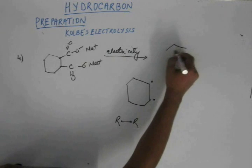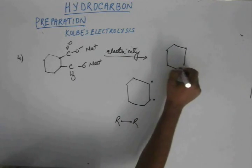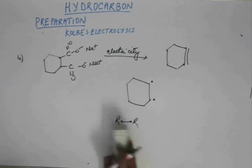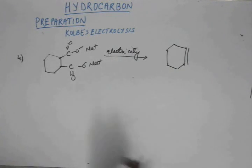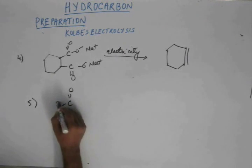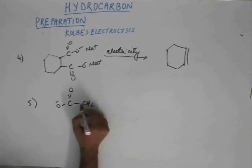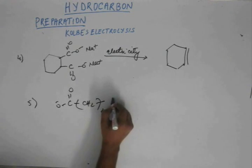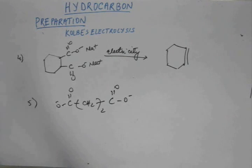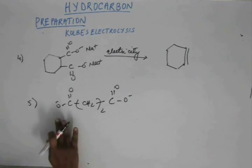So the final product would be straight away cyclohexane. Easy enough to understand. Similarly, suppose I have sodium or potassium salt of 1,7-heptane-dioate.